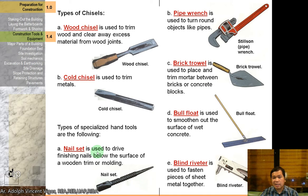Specialized hand tools include: the nail set, used to drive finishing nails below the surface of a wooden frame or molding; a pipe wrench, used to turn round objects like pipes; a brick trowel, used to place and trim mortars for bricks or concrete blocks; a bull float, used to smooth out the surface of wet concrete; and a blind riveter, used to fasten pieces of sheet metal together.